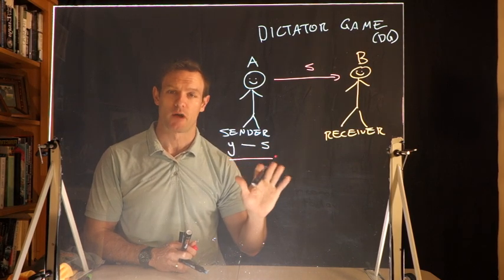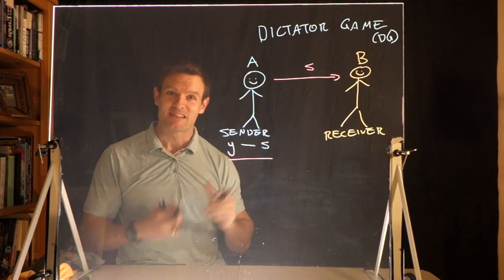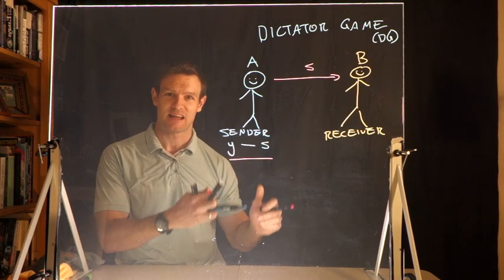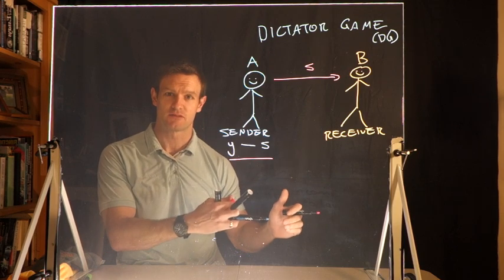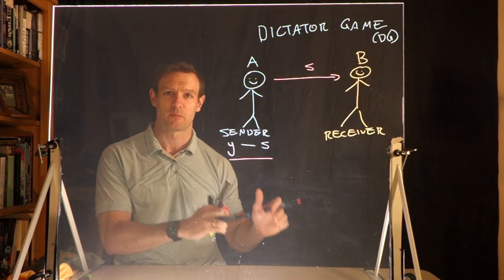B cannot respond. This is why it's called the dictator game. A dictates what B gets. The sender dictates what the receiver receives. There is no response by person B. A simply gives some amount to B.